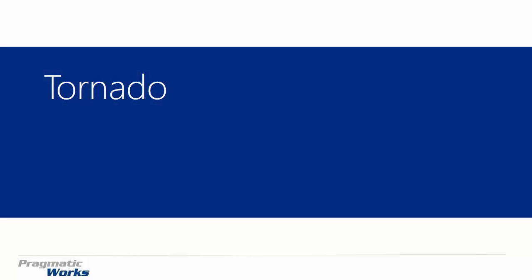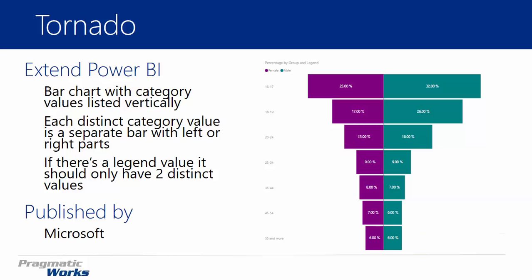Welcome back to our Power BI Custom Visuals course. In today's session, we're going to be looking at the Tornado Chart. The Tornado Chart was developed by Microsoft, and basically the idea is it gives you the ability to look at a bunch of categorical data. It shows almost like a bar chart that lists the categorical values vertically.